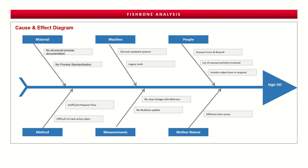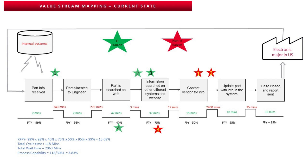After the brainstorming session identifying root causes, the team studied the end-to-end value stream map. They created a current state value stream map where the first step was part info received, then the part is allocated to the engineer, then the part is searched on the web, then information is searched on other systems and customer websites. If information is received, it does not go to the vendor; if not received, they contact the vendor. They then update the information in the system and close the case, sending a report.